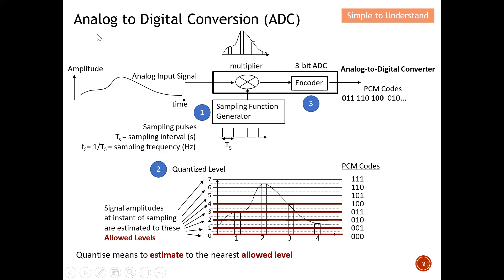The next step is encoding. The key purpose of analog to digital conversion is to convert the data into a digital signal. As you can see, the analog signal is converted into a digital signal, and this digital data is then ready to be sent to a receiver.